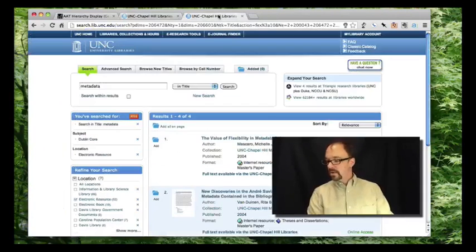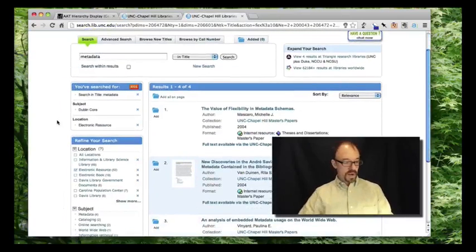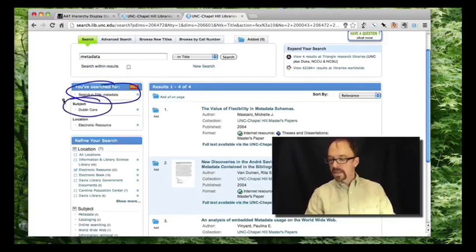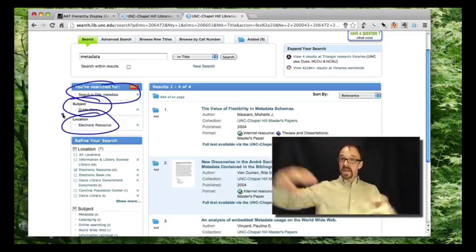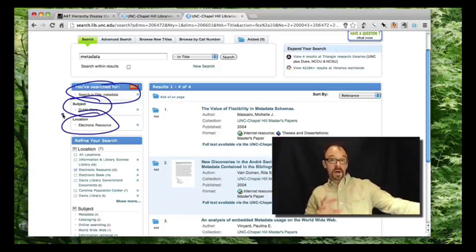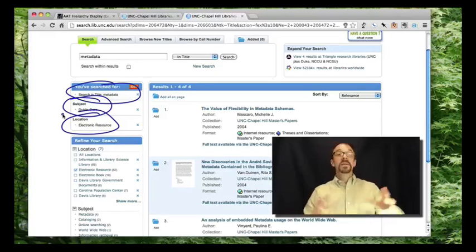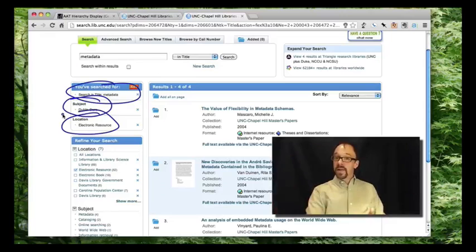I created another sort of canned search here. And what I've searched for is works with metadata in the title that are on the subject Dublin Core, which is a topic we'll come to in our next unit, that are only electronic, e-books or online. So I've said, here's the title facet. Give me things with this word in the title, things that are only electronic, making a distinction between electronic objects and physical objects, and things with the subject Dublin Core. So out of this entire facet, that is the LCSH subject headings, give me only things that have this one term in them.